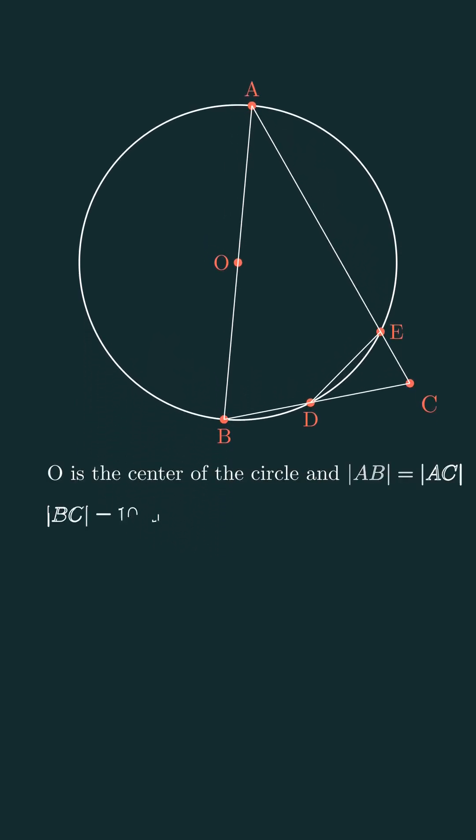O is the center of the circle, and AB equals AC, and the length of BC is 10 units. So what is the length of DE?